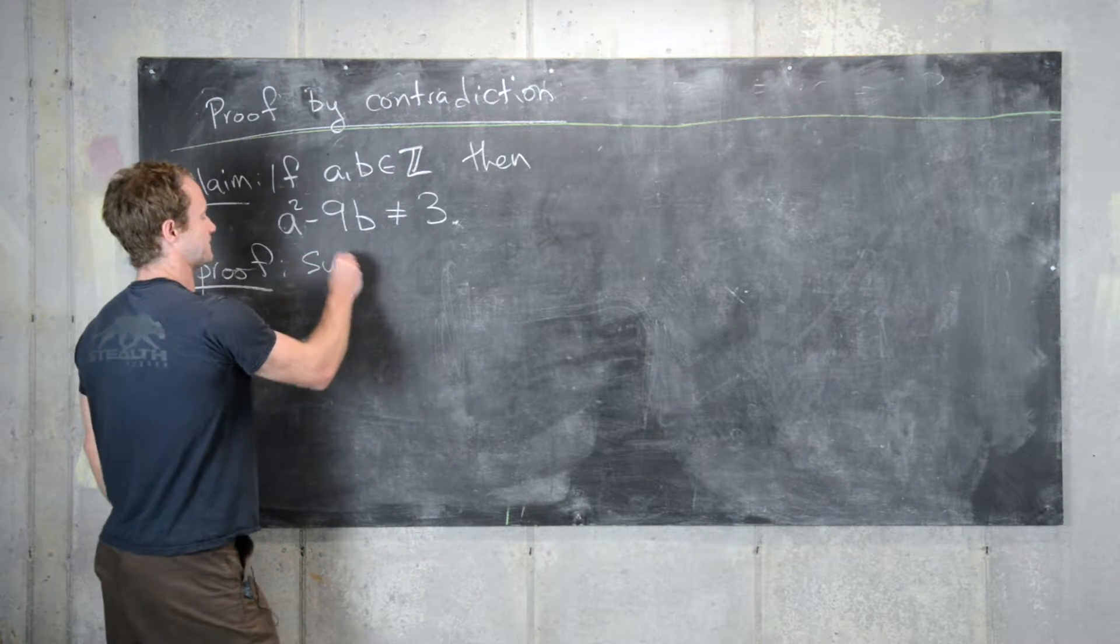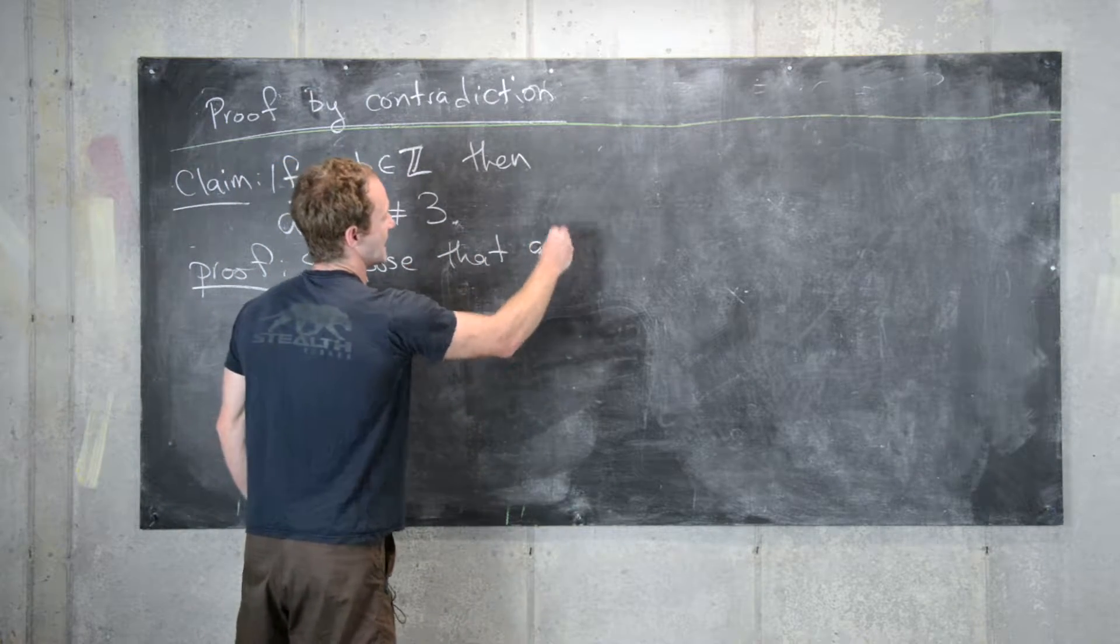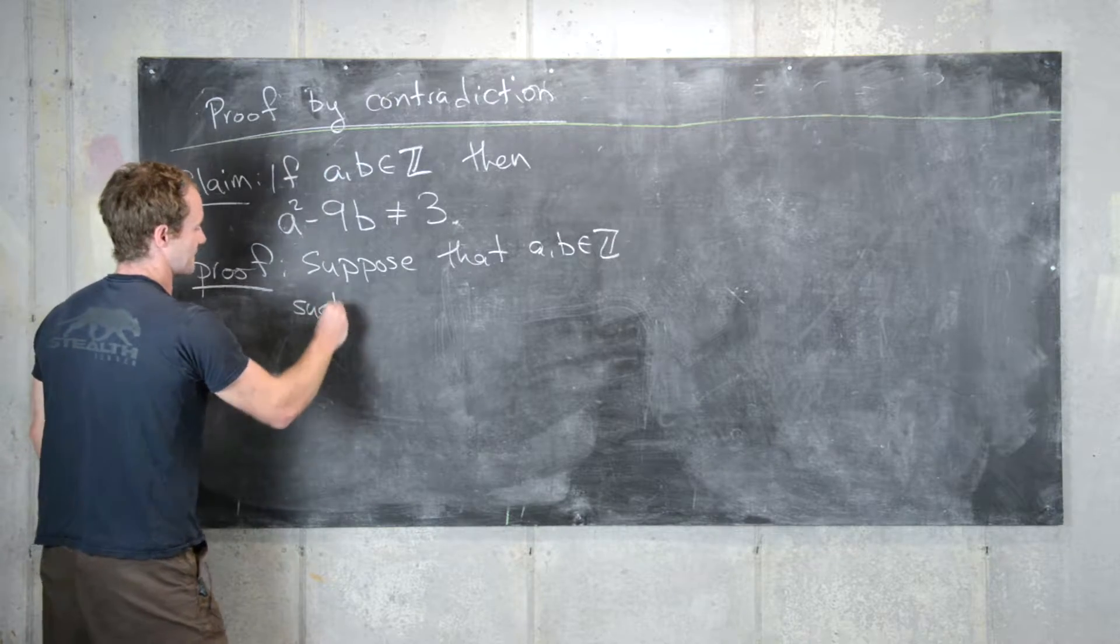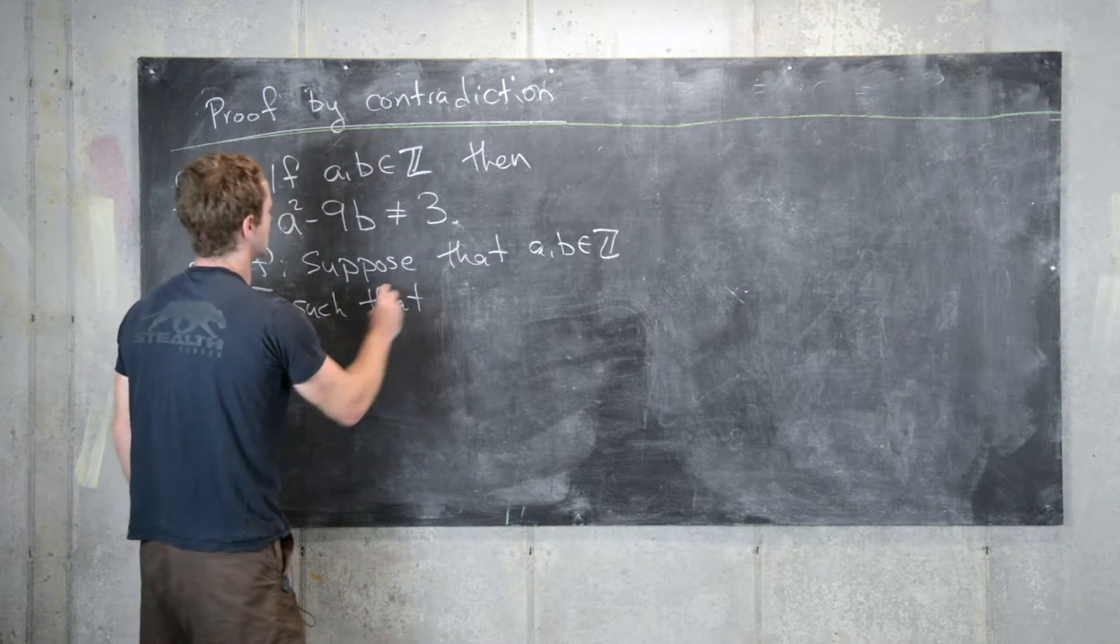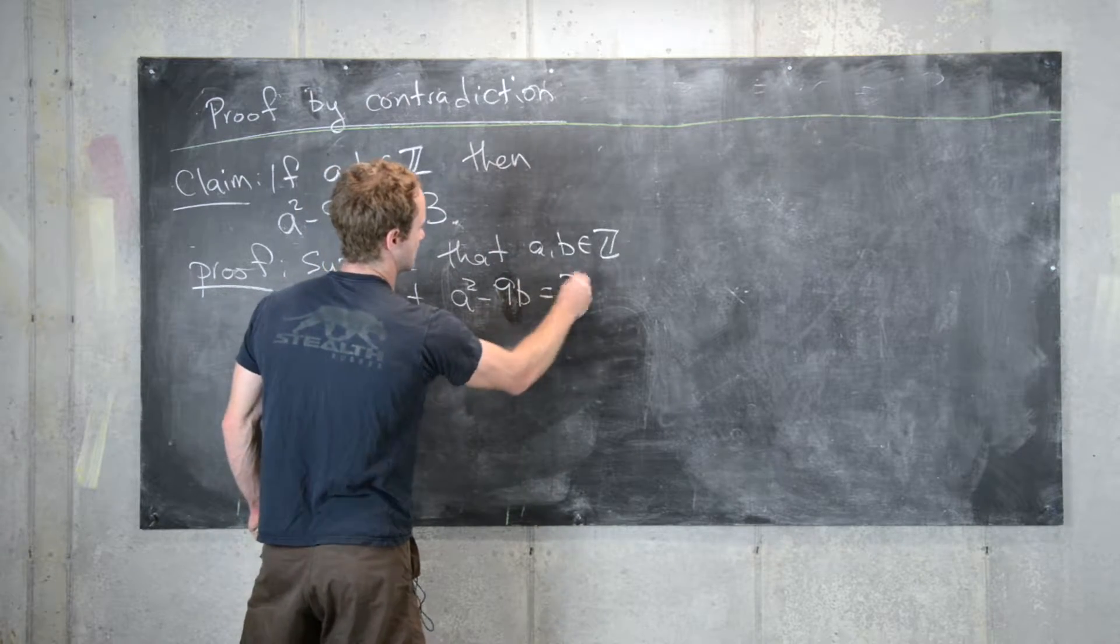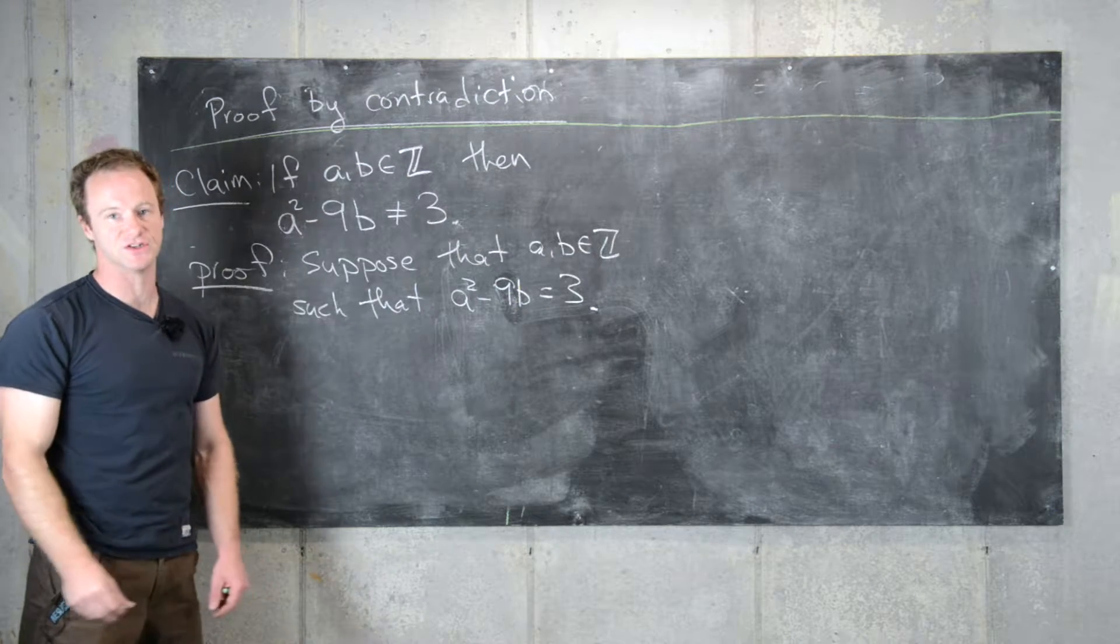So let's suppose that a and b are integers such that a squared minus 9b equals 3. In other words, we have found integers that do that.